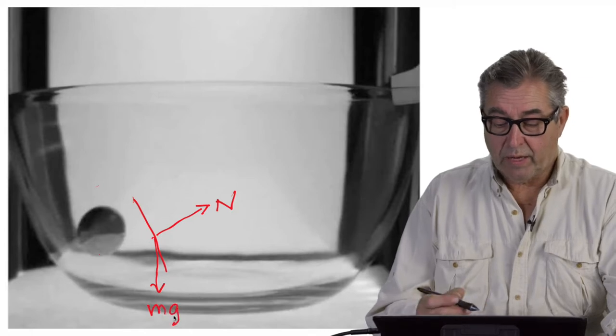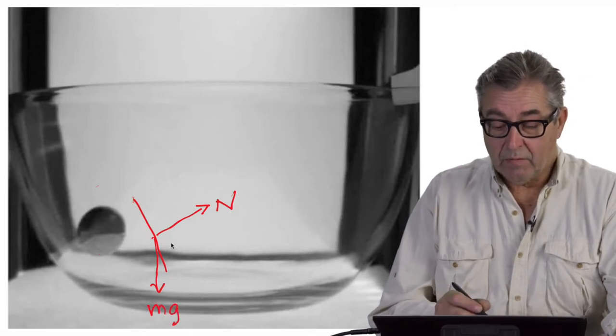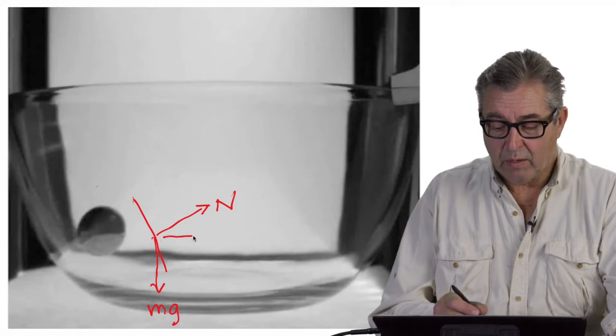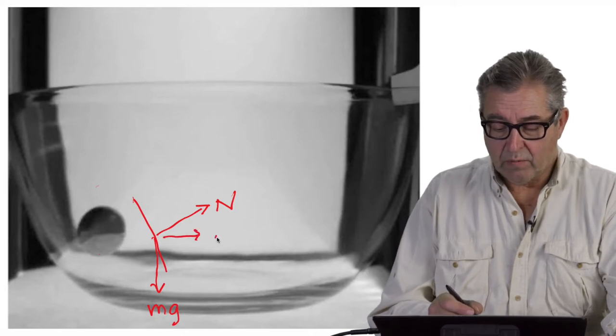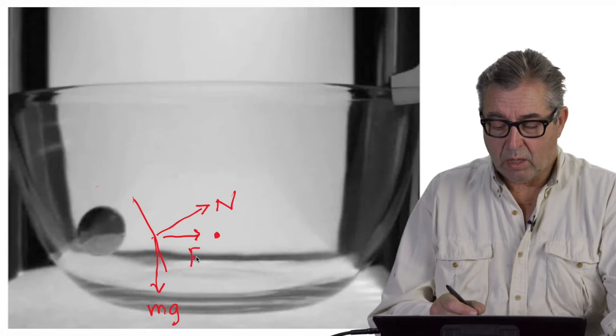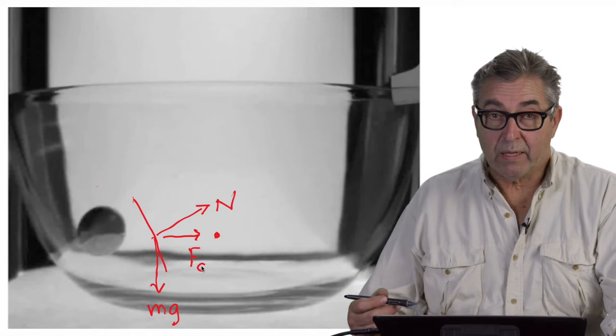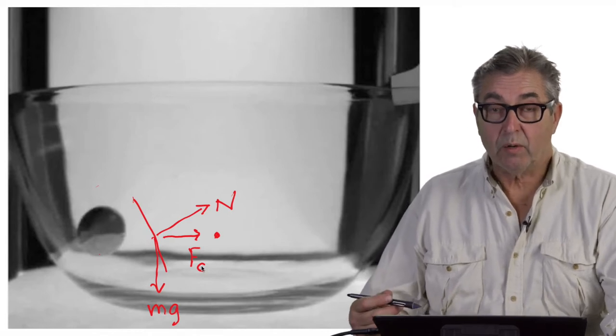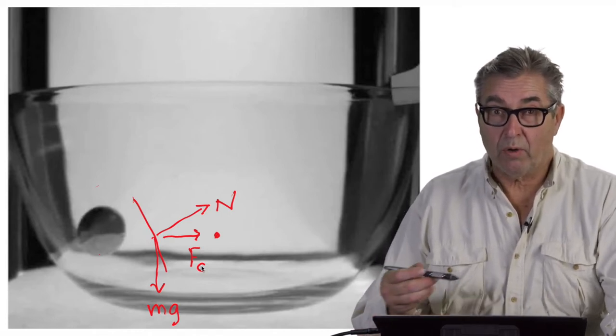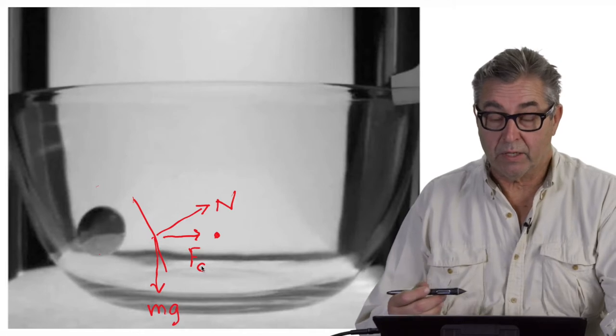Those two vector forces add vectorially to produce a net force pointing inward towards the center of the circle, and we can call that a centripetal or center-seeking force that's required to maintain the uniform circular motion of the ball around and around inside the dish.